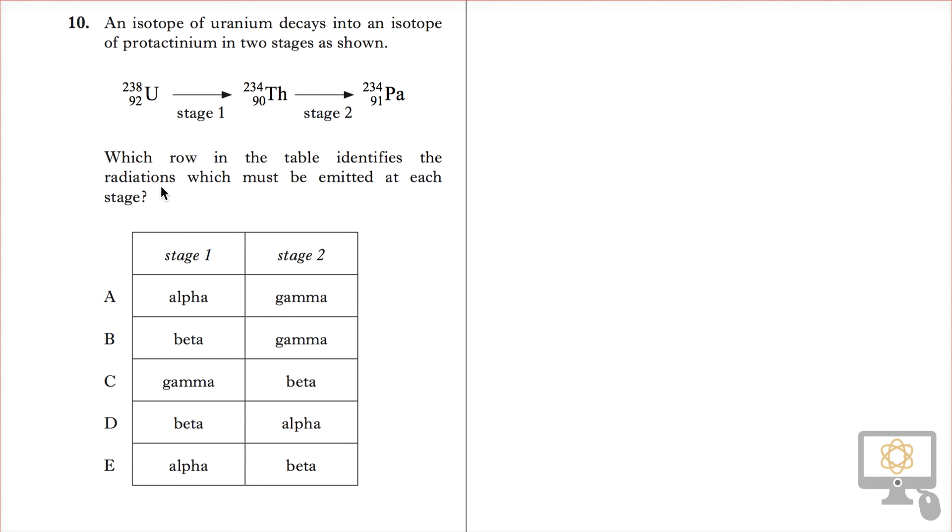Which row in the table identifies the radiations which must be emitted at each stage?